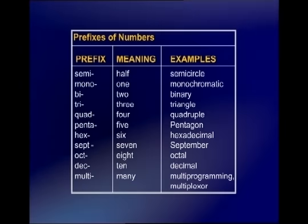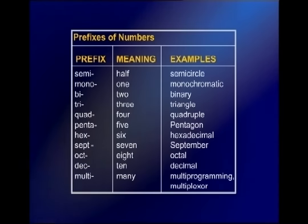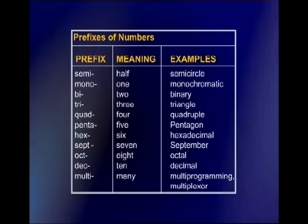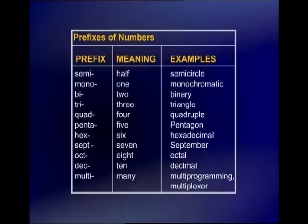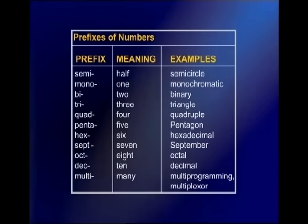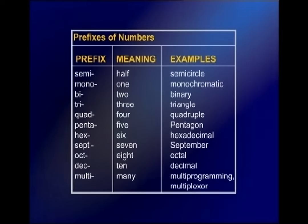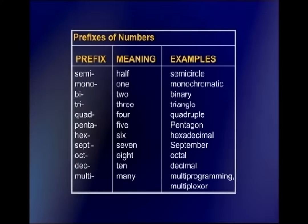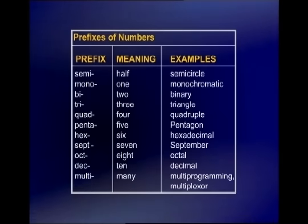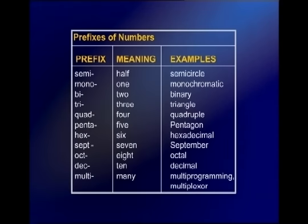Continuing number prefixes: 'hex' means six (hexadecimal), 'sept' means seven, 'oct' means eight (octal), 'des' means ten (decimal), and 'multi' means many (multiprogramming, multiplexer). There are other prefixes besides: 'pro' means for, 'auto' means self (automatic), 'co' means going together (coordinate), 'neo' means new (neoclassical), and 'pan' means all — for instance, 'pan-Islamic' meaning dealing with all Islamic countries.